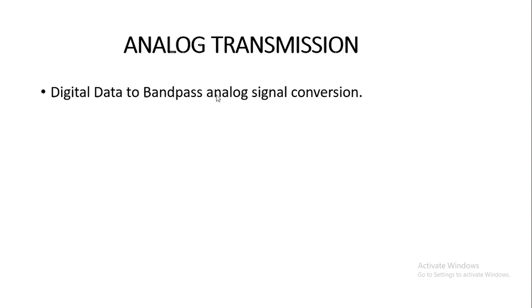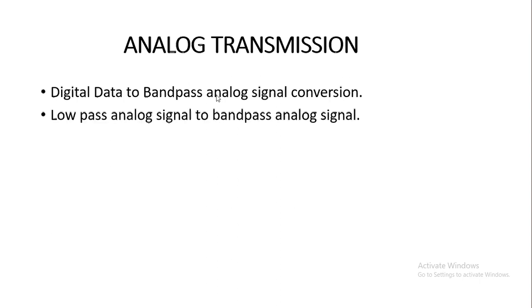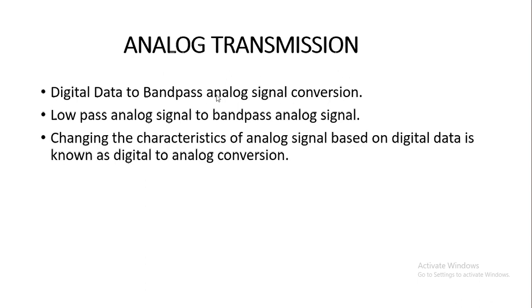Hi friends, this is Aryan. Today we are going to learn analog transmission. Analog transmission mainly consists of transmitting your digital data by using your bandpass channel. Particularly, analog transmission consists of two parts: one is converting your digital data to bandpass analog signal, and converting your low-pass analog signal to bandpass analog signal.